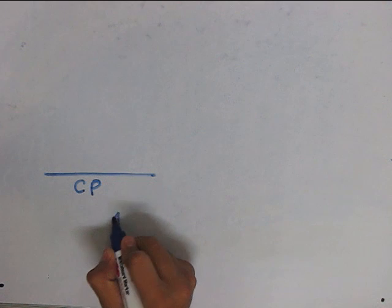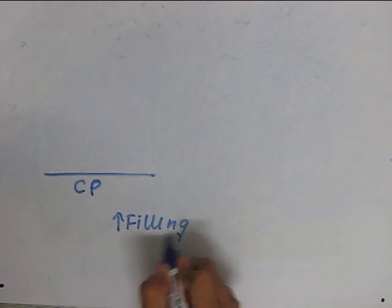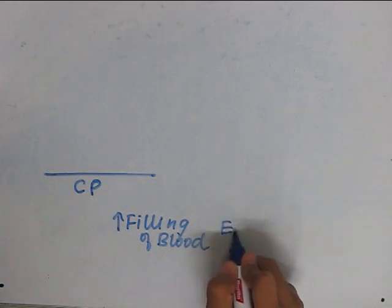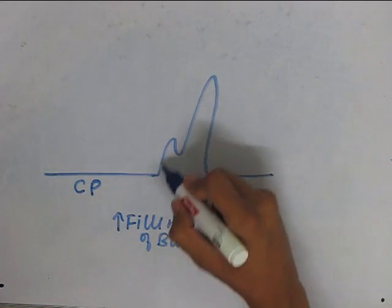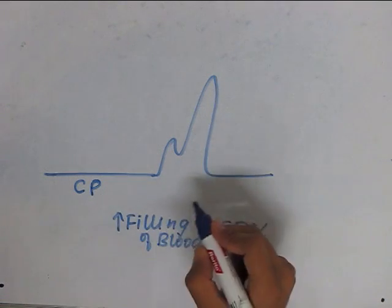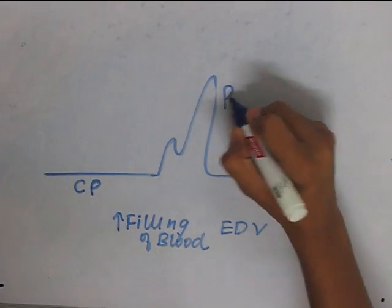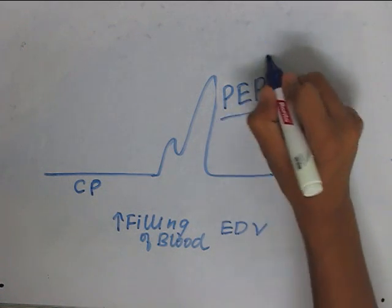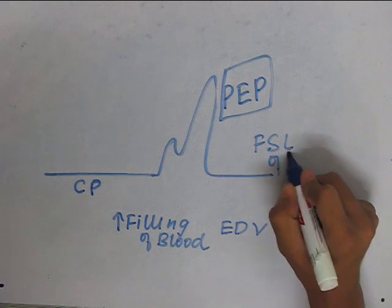During the compensatory pause, there is increased filling of blood, which increases the end-diastolic volume. There is usually a higher degree of response following the compensatory pause, and this is called post-extrasystole potentiation. This is in accordance with the Frank-Starling law of the heart.